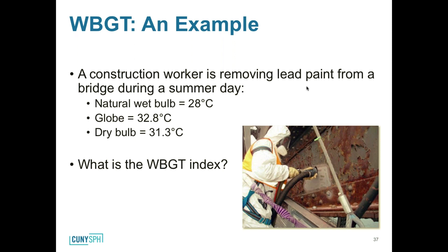We can adjust the WBGT index for clothing by adding a correction factor to the final calculated index. These correction factors are in degrees Celsius, so be aware you need to add a Celsius value to a Celsius WBGT index, or convert to Fahrenheit if your index is in Fahrenheit. This comes from ACGIH guidance.